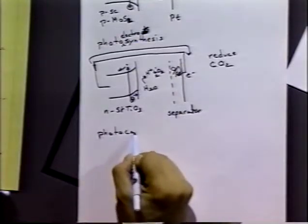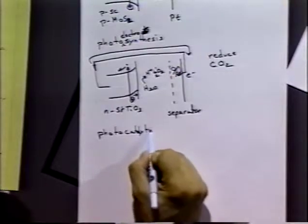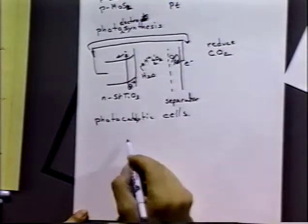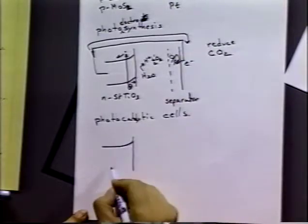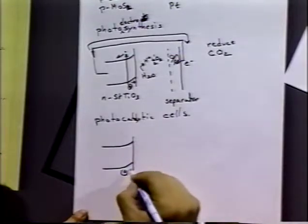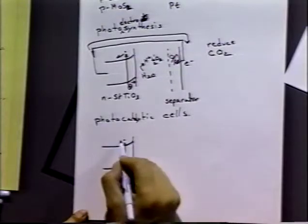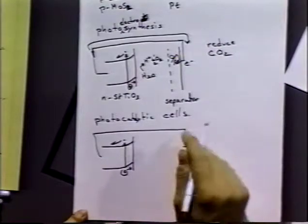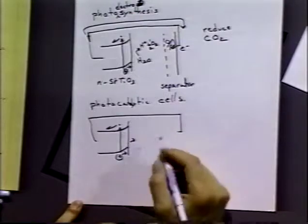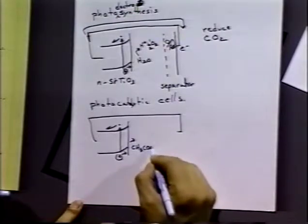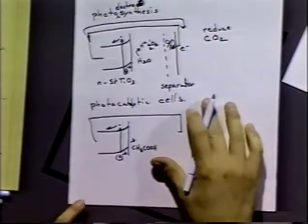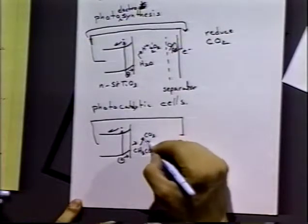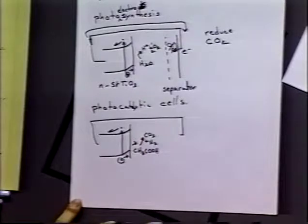Photocatalytic cells. The idea here is taking a reaction that is slow and driving it faster using the photocatalysis process. So in this case, we've got holes in the system and what we can do is take acetic acid and oxidize it to carbon dioxide plus protons, or hydrogen.